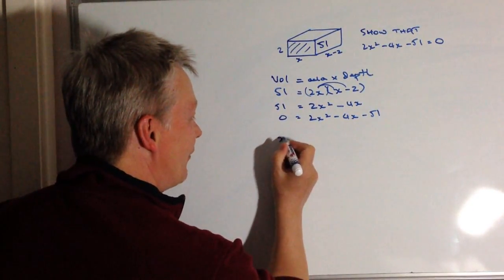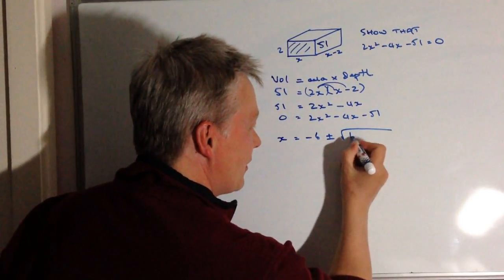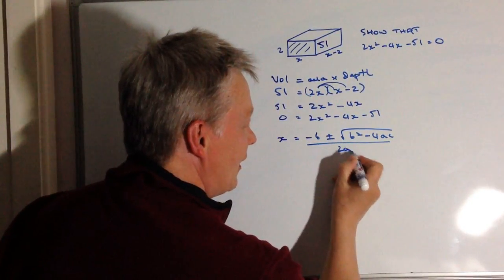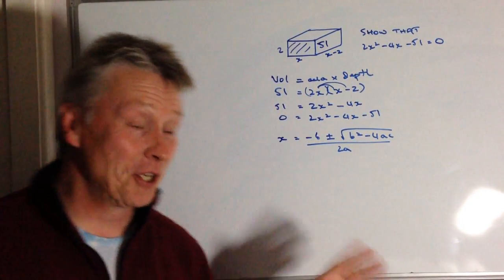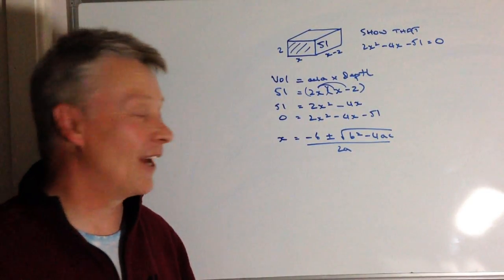Really sorry, but you're going to have to remember that x equals minus b plus or minus the root b squared minus 4ac all over 2a. It used to be on the exam paper as a formula, no longer. I'm afraid you've just got to remember that.